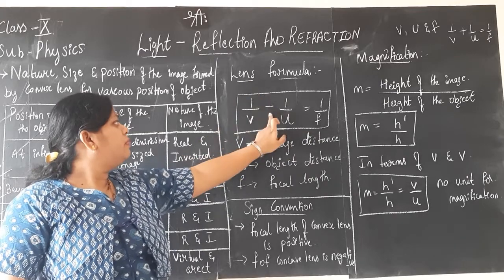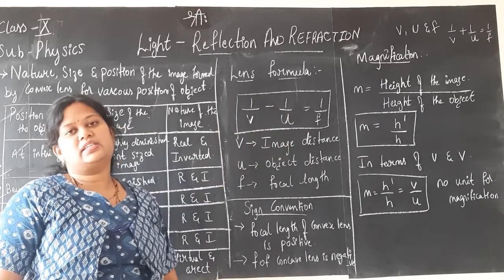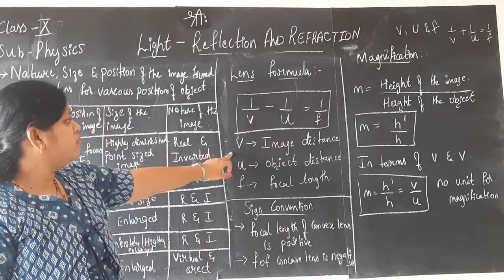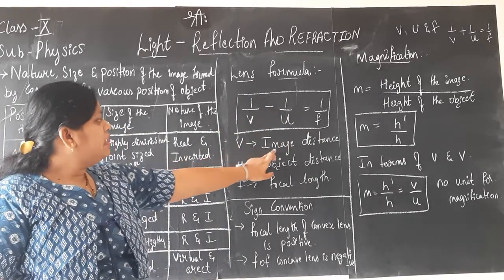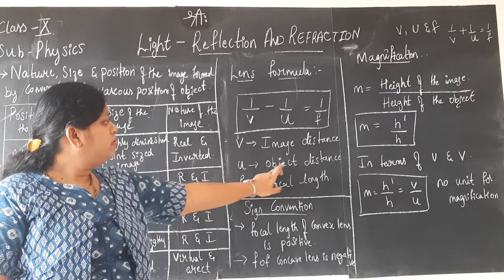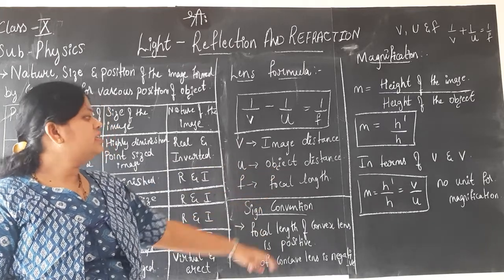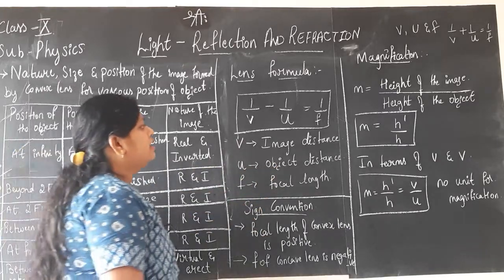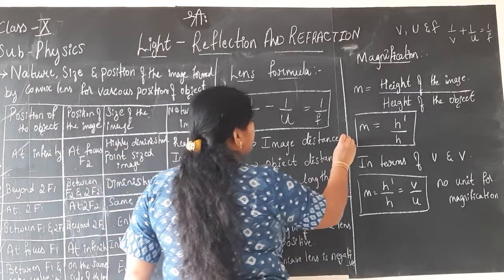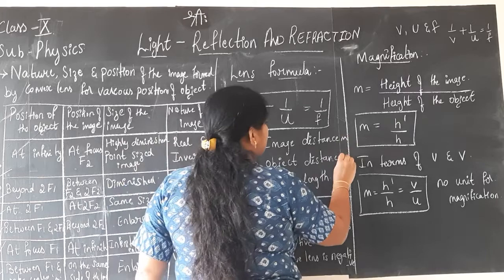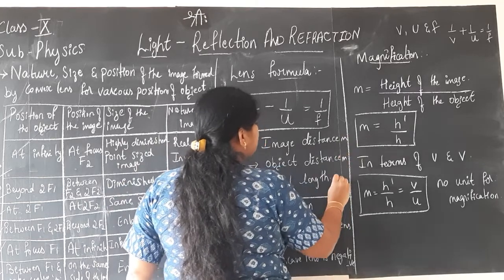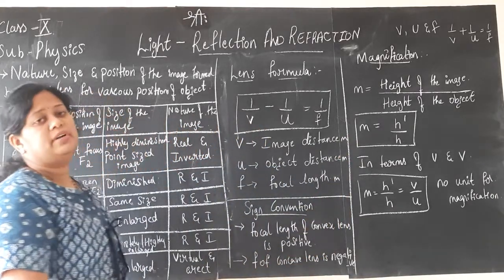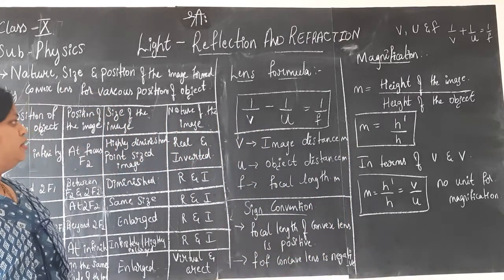The lens formula has a minus sign — that is very important. The terms are: v is image distance, u is object distance, f is focal length, and all the terms are measured in meters.